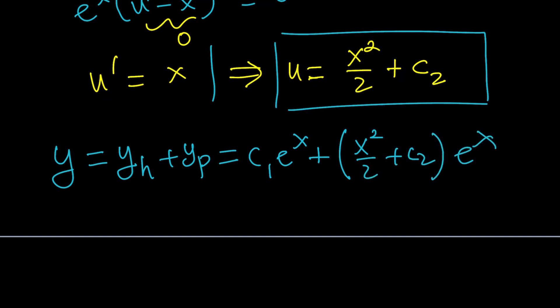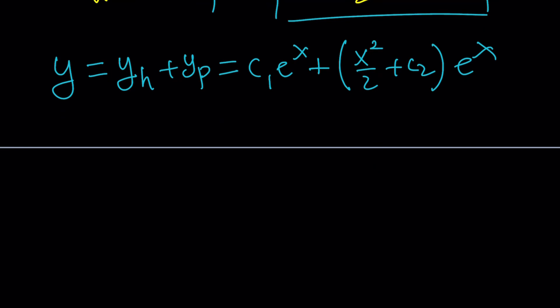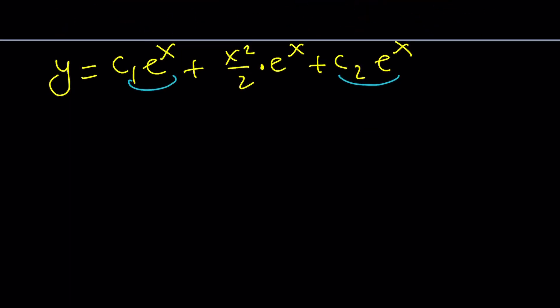So, this should be the whole thing and you can kind of go home, right? We're done. Wait a minute. I do notice something. When you distribute, you're going to get something interesting. Let's do it. c sub one e to the x, x squared over two times e to the x plus c sub two e to the x. Now, we can go ahead and put these two together and write it as c sub one plus c sub two times e to the x.